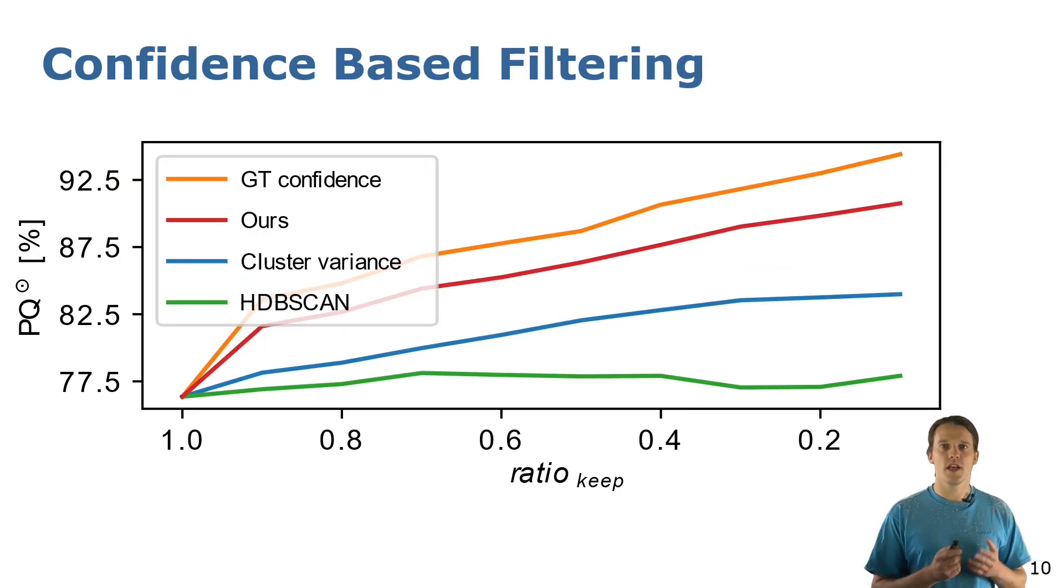As you can see here on the left, if we keep all the predictions so we don't discard any, we obtain the same performance as you saw on the table before. Instead, the more predictions we discard, so the more right we go on the plot, the better our remaining predictions become.